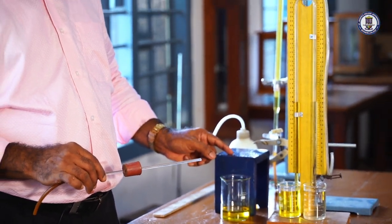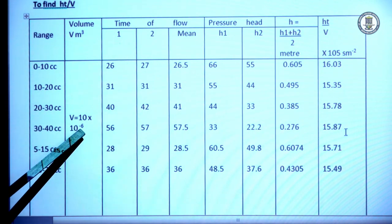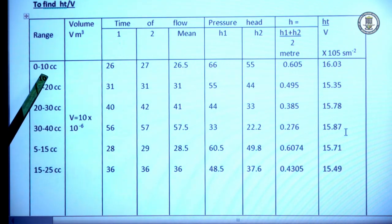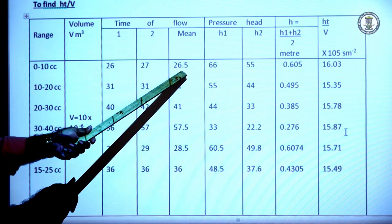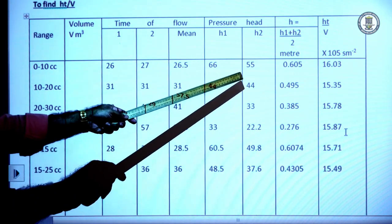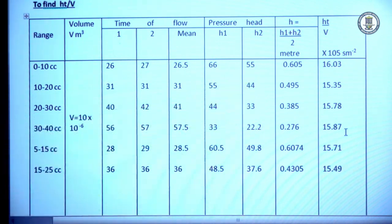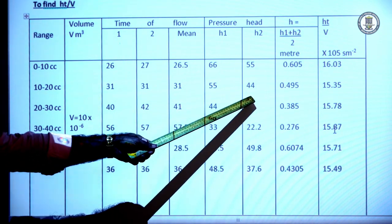Now we discuss the observations for the viscosity arrangement to find H·T/V. The experiment was performed for ranges 0 to 10, 10 to 20, etc., with volume fixed at 10 cc (= 10 × 10⁻⁶ m³). For range 0 to 10: time of flow was 26 s and 27 s, mean time 26.5 s. Height H1 (capillary tube to 0 level) = 66 cm, H2 (capillary tube to level 10) = 55 cm, average H = 0.605 m, and H·T/V = 16.303.